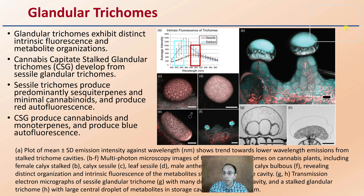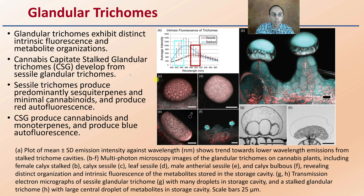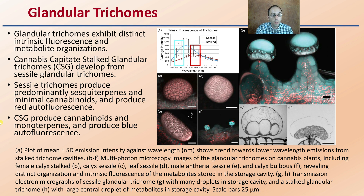Looking at granular trichomes in more detail: these granular trichomes exhibit distinct intrinsic inflorescence and metabolite organization. CSGs developed from those sessile granular trichomes. Sessile trichomes produce predominantly sesquiterpenes and minimal cannabinoids, and produce red autofluorescence. The CSGs produce cannabinoids and monoterpenes, and produce blue autofluorescence, as shown here with the staining. We can see the average intensity for intrinsic fluorescence in trichomes at different wavelengths being produced, with some degree of variation.